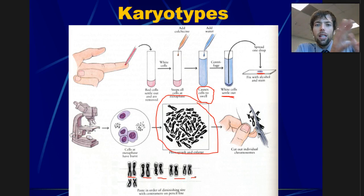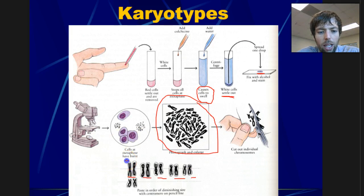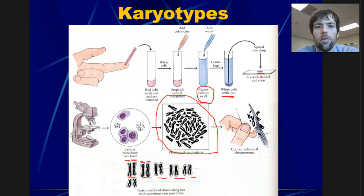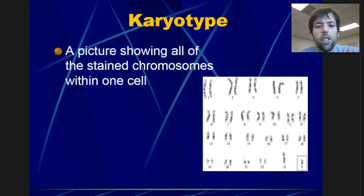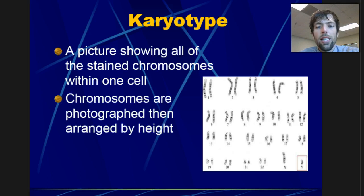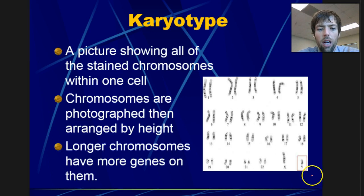Remember, you get one complete set from mom and one complete set from dad. So dad will give you chromosome number one, and mom will give you a chromosome number one. Then the slightly shorter chromosome number two — dad will give you one and mom will give you one, and so on. A karyotype is a picture showing all of the stained chromosomes within one cell. They're photographed and arranged by height. These longer chromosomes near the top tend to have more DNA, because that's why they're longer.